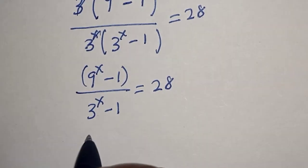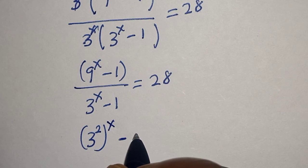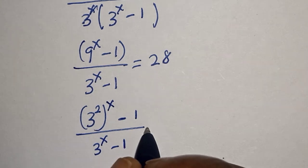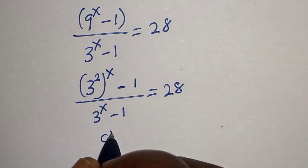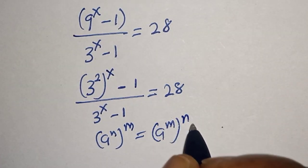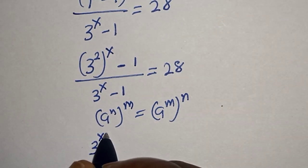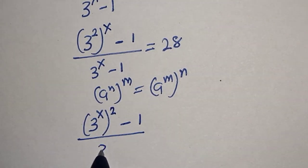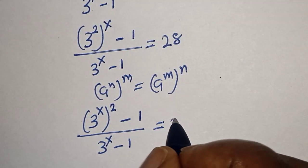Then 9 raised to power s can also be written as 3 raised to power 2s. So we have 3 raised to power 2s minus 1, divided by 3 raised to power s minus 1, is equal to 28. Take note of this rule: a raised to the power m, raised to the power n, is equal to a raised to the power m times n.